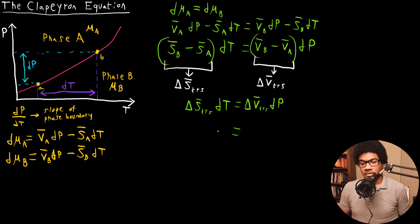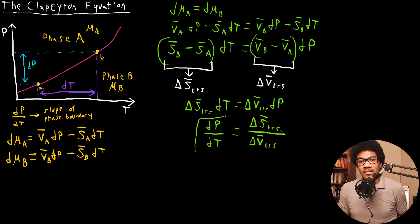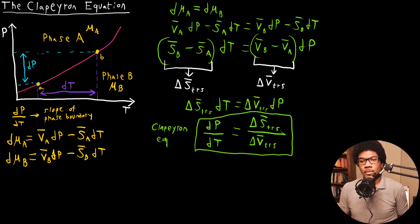We can express this as the slope of a phase boundary: dp/dT = ΔS̄_trs / ΔV̄_trs. This is the Clapeyron equation, and it gives us a general equation we can use to get the slope for a phase boundary.